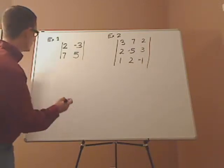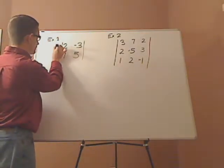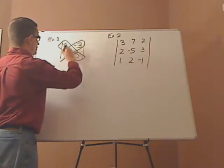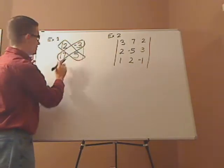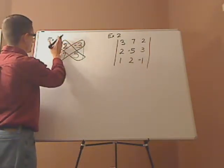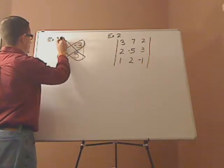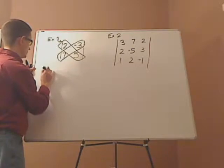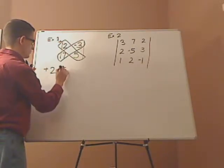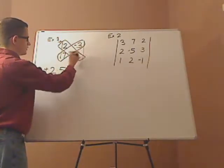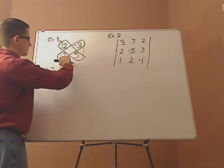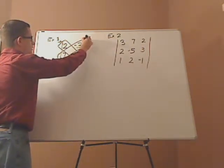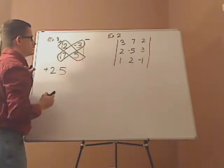Let's look at this one first. You want to take into consideration the diagonals. This first diagonal right here goes from up to down — that's going to be positive. So that'll be plus 2 times 5. Then you look at your second diagonal — it's going from down to up, and that's minus.